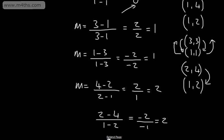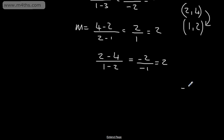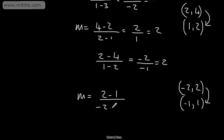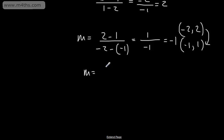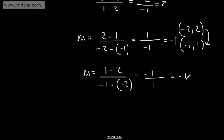If we make the gradient now negative 1, we can see this goes down 1 for every 1 it goes across — so it's negative 1 over 1. Using points (-2, 2) and (-1, 1): the change in y is 2 minus 1, over the change in x which is negative 2 minus negative 1, giving 1 over negative 1, which equals negative 1. I could have swapped those: 1 minus 2 over negative 1 minus negative 2 gives negative 1 over positive 1, which also equals negative 1.